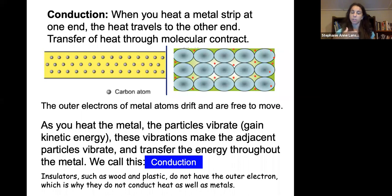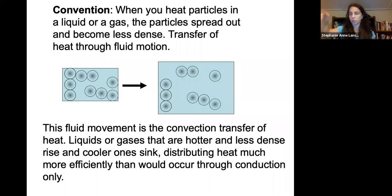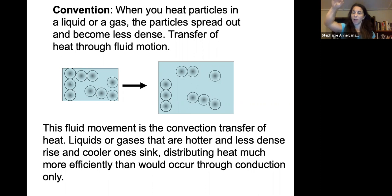Insulators such as wood or plastic don't have those free outer electrons, which is why they don't conduct heat as well as metals. With convection, when we heat particles in a liquid or gas, the particles spread out, become less dense, and transfer heat through fluid motion. Liquids that are hotter and less dense rise, and the cooler ones sink, which distributes heat much more efficiently than conduction alone.